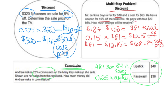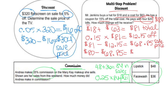He pays with four $20 bills, which is $80 total. We want to know how much change he will receive: $80 minus $68.85 equals $11.15 in change. That's how much he will get back in change.